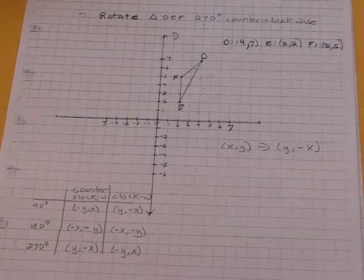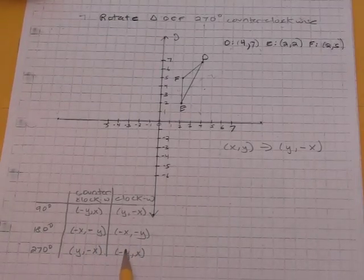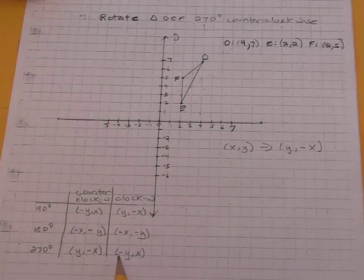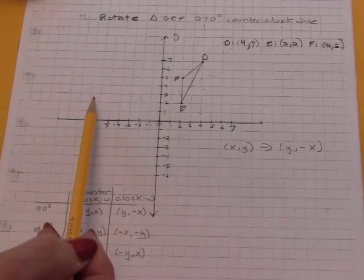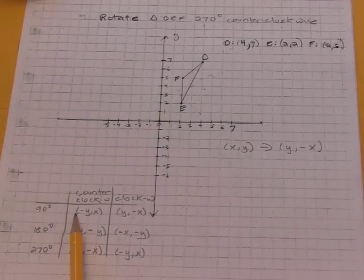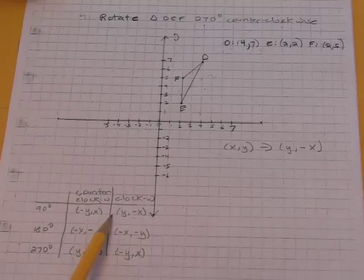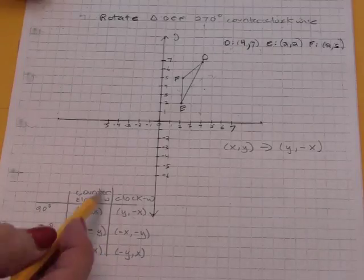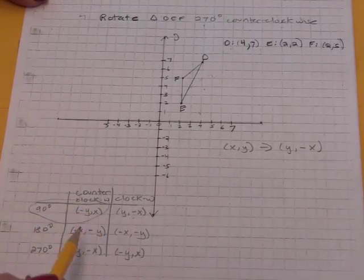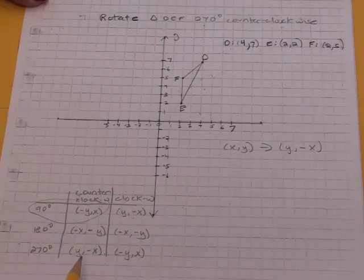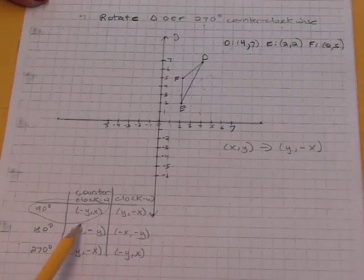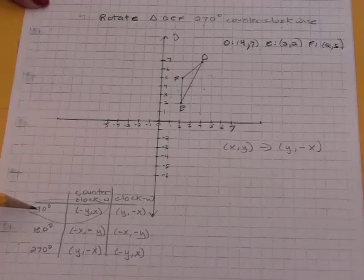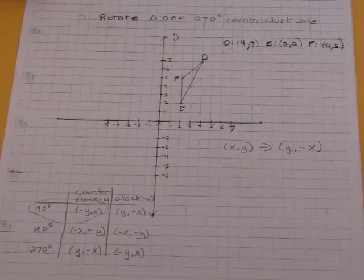And finally, 270 degrees clockwise is like 90 degrees counterclockwise. So we pull this rule down here. It turned out that all we needed was this one rule. We did it twice to get here. We did it three times to go here. And then we used these to get the clockwise rules. So we built everything we know from the 90-degree counterclockwise rotation.